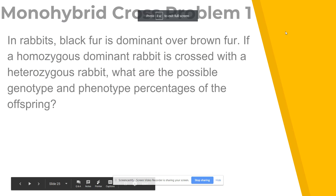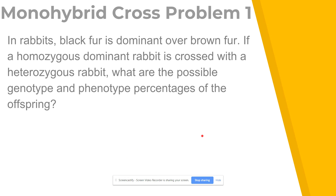In this video I'm going to show you how to do a monohybrid cross. Before we jump into the actual problem, we're going to take a look at what monohybrid means. If we look at the prefix mono, it means one. So a monohybrid cross is going to be the cross showing how one single trait is passed on from parent to offspring.